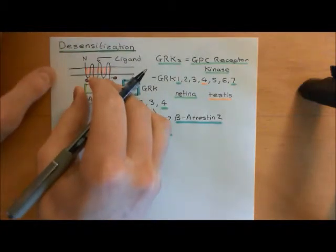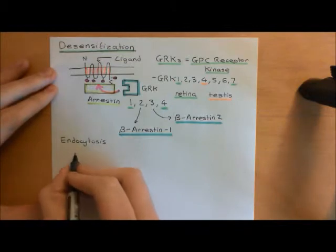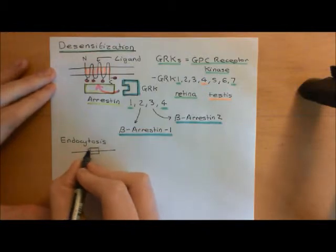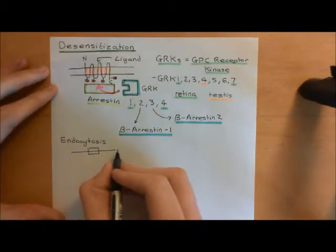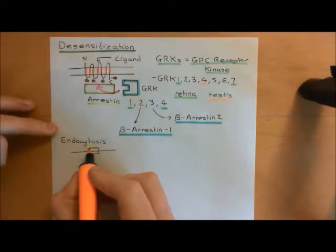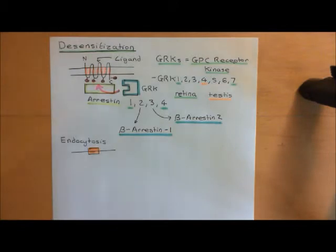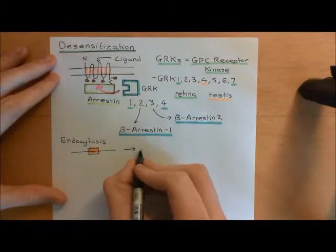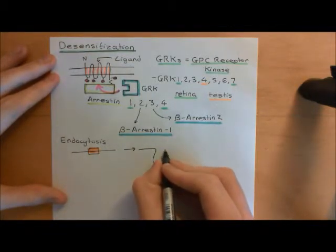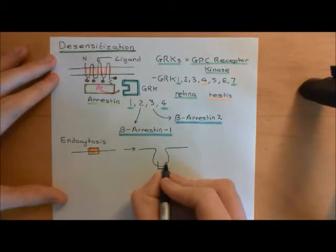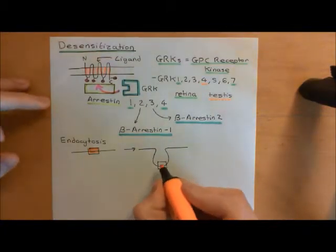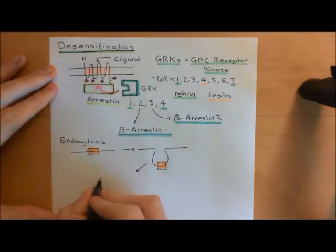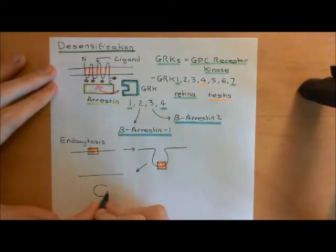Without going through the actual mechanism of endocytosis, basically what it involves is cell membrane being pinched off. So here we have our G-protein-coupled receptor in complex with the arrestin protein. The arrestin protein is going to trigger this receptor being pinched off into an endocytic vesicle — you're going to form a little structure from the plasma membrane, and eventually the endocytic vesicle will be completely pinched off from the plasma membrane.